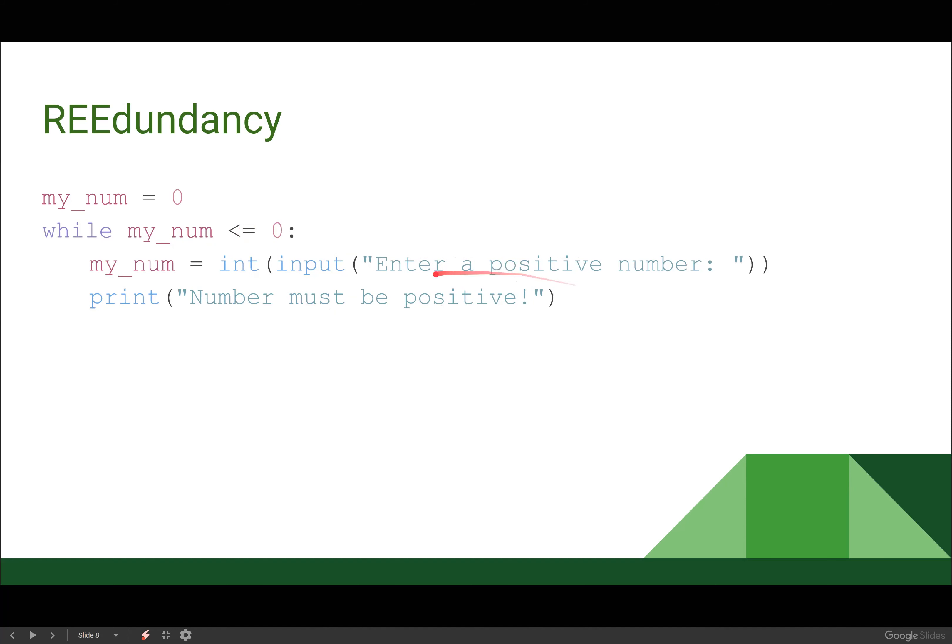So if I type a positive number, it's going to say number was positive, right? So if I enter negative one, it'll print number must be positive. I expect that. It's going to loop it back. But then if I enter five, five is a positive number, but I'm still going to see number must be positive before the loop ends.